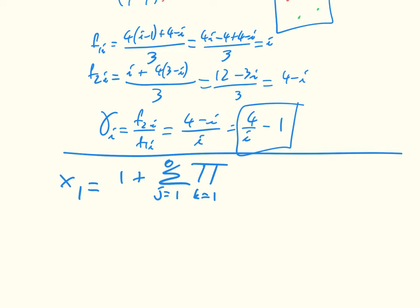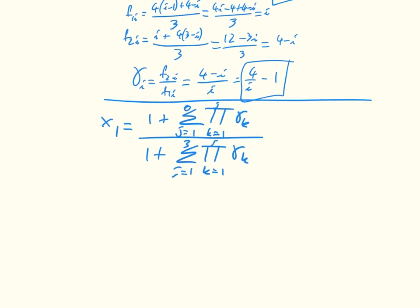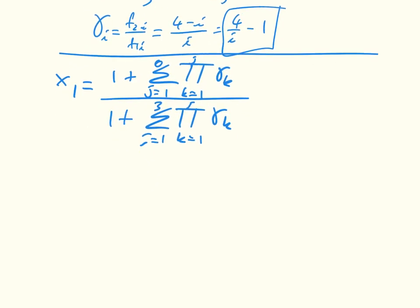k equals 1 times j of gamma k, divided by 1 plus the sum from j equals 1 to 3 of the product from k equals 1 to j of gamma k. And that is just equal to 1, all of this is just the sum over nothing. This set here doesn't really make any sense. 1 divided by 1 plus, let me go straight ahead.